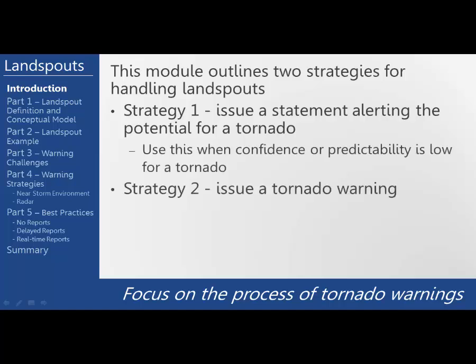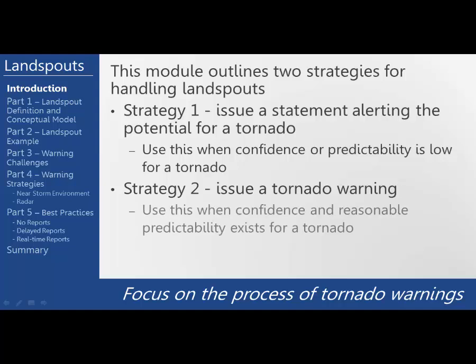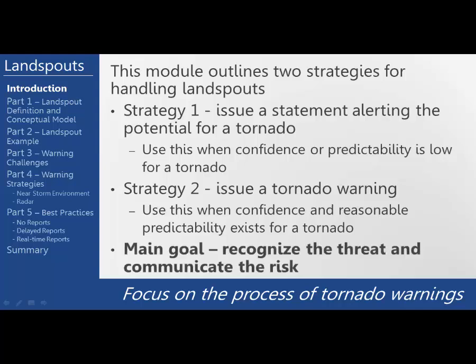On the other hand, strategy two is to issue a tornado warning. We use this when confidence and predictability exists based on radar trends and environmental cues for a tornado. Ultimately, the main goal of this module is for you to be able to recognize the threat and communicate the risk.